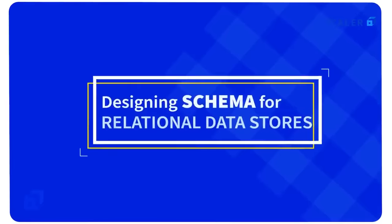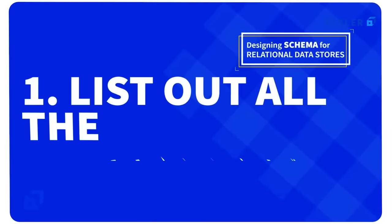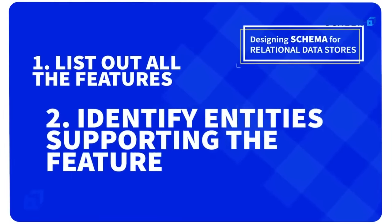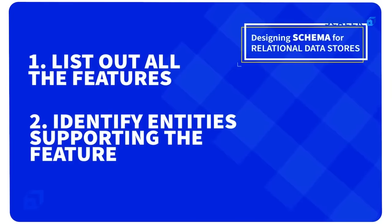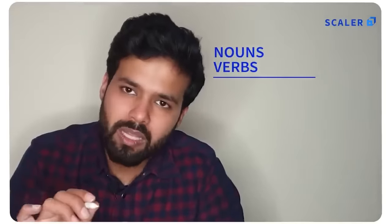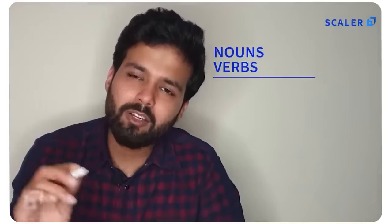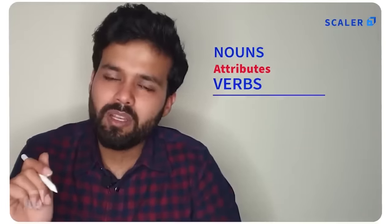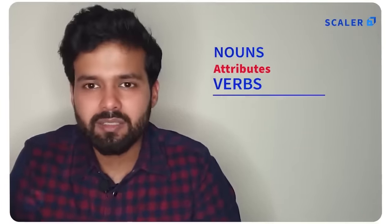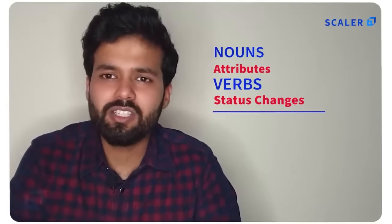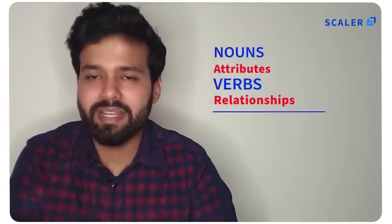To design any relational data store schema, all you need to do is list down all the features, then identify all the entities and relationships that will support your feature list. To do that, underline all the nouns and verbs. All the nouns will correspond to either entities or attributes in one of the entities you've already listed. The verbs will translate into either status changes or the relationship between two entities.